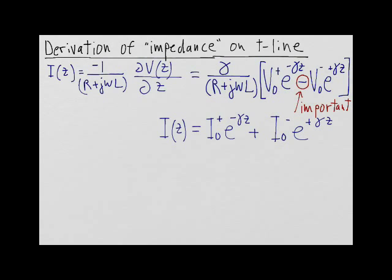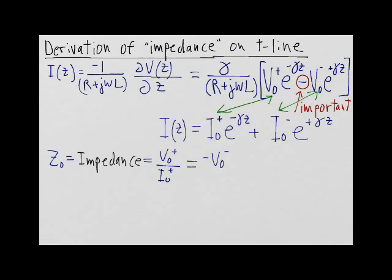And if we then equate the two forward currents and the two backward currents together, we can define the characteristic impedance z0 as the ratio of the forward voltage to the forward current equivalent to the minus the backward voltage divided by the backward current.